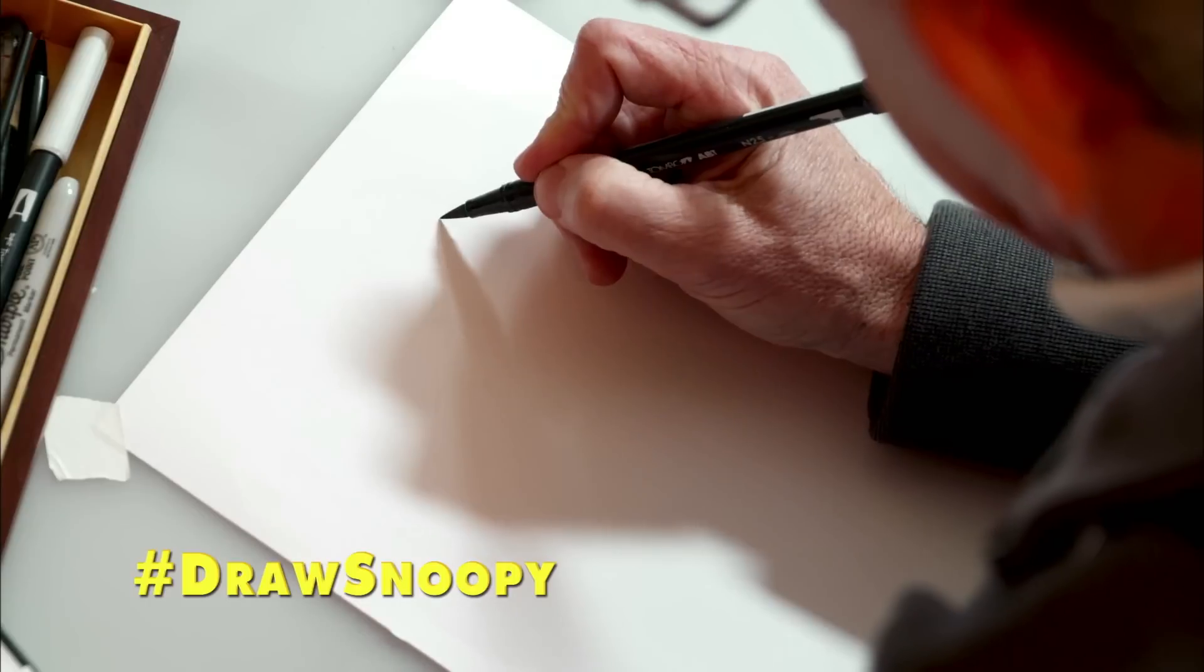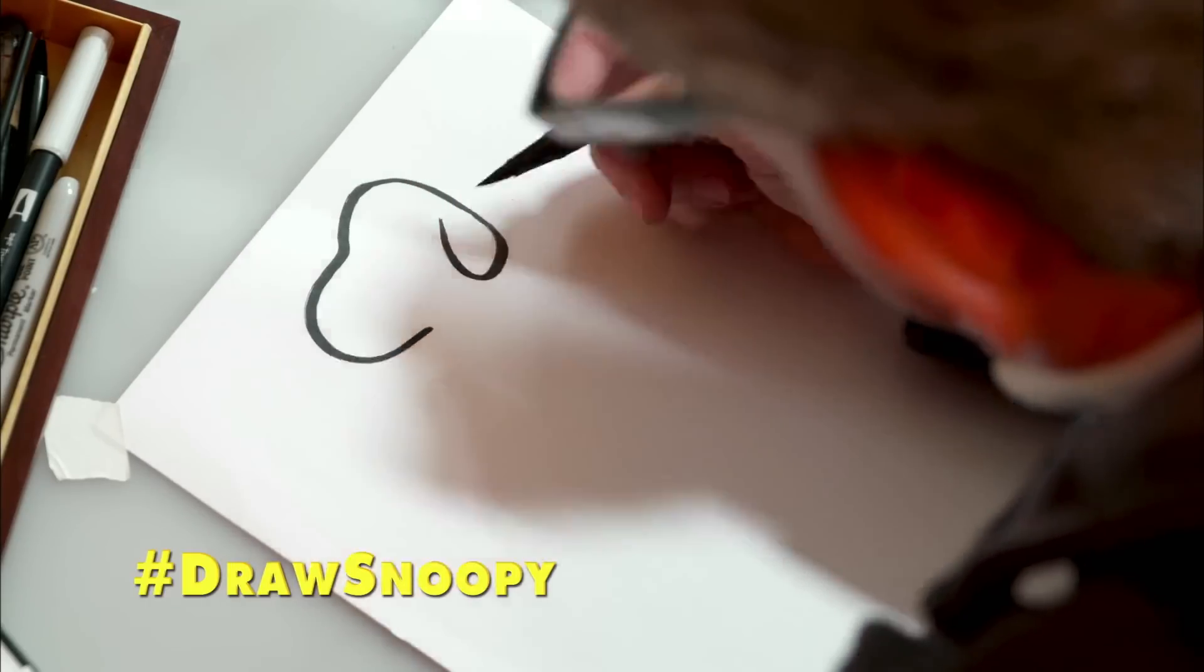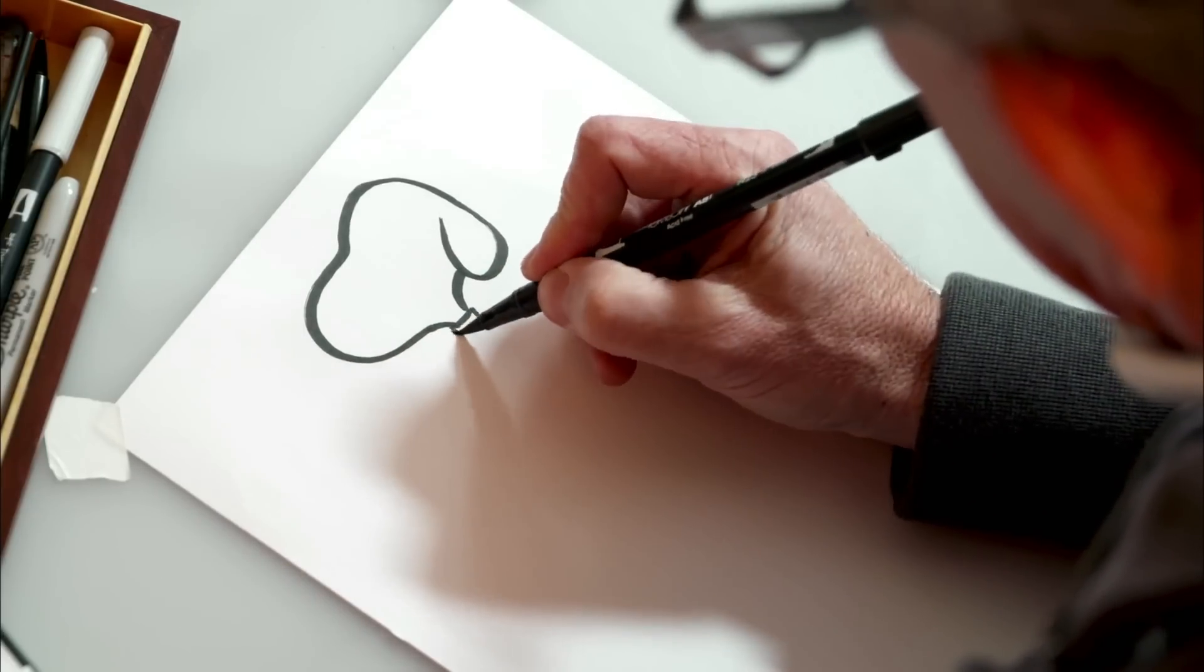Let's draw Snoopy sitting. First I'm going to start with his ear and up around the top of his head and then around the front of his face. He's got a tiny little neck and, of course, a collar.